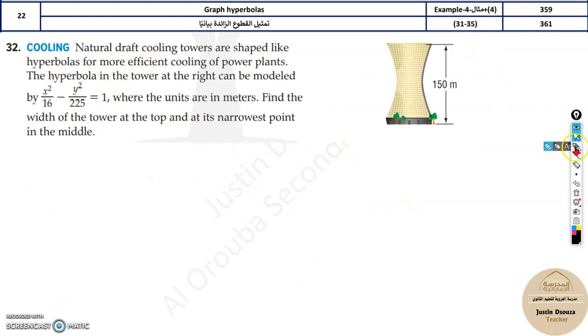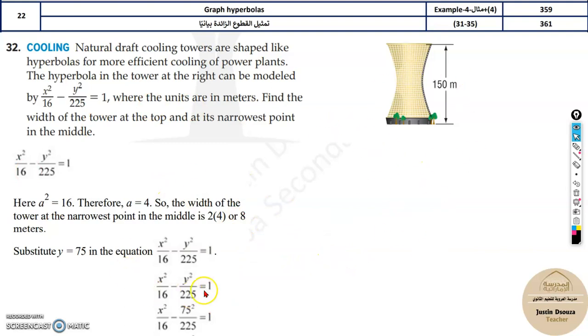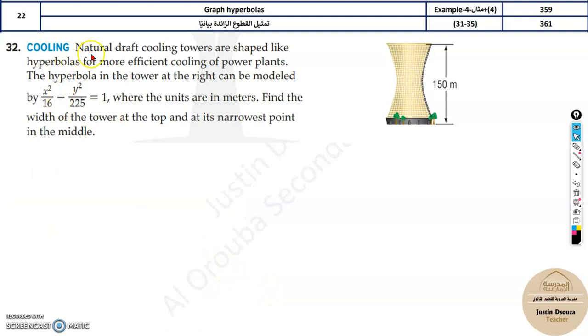Now over here as well, I'll quickly solve this one. It's similar. All the problems over here have the explanations in detail. So you can go through by it yourself, solve it, check the methods and the answers. Now they have told this is the natural draft cooling tower, which is shaped like a hyperbola because it increases the effectiveness of the cooling of power plants. And the hyperbola in the tower at the right can be modeled by this equation. We need to find the width of the tower at the top and the narrowest point in the middle.